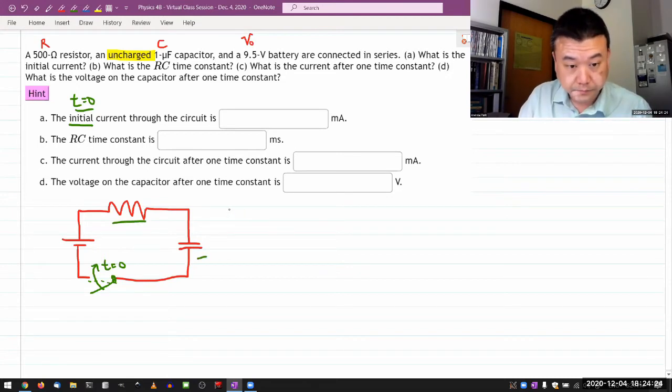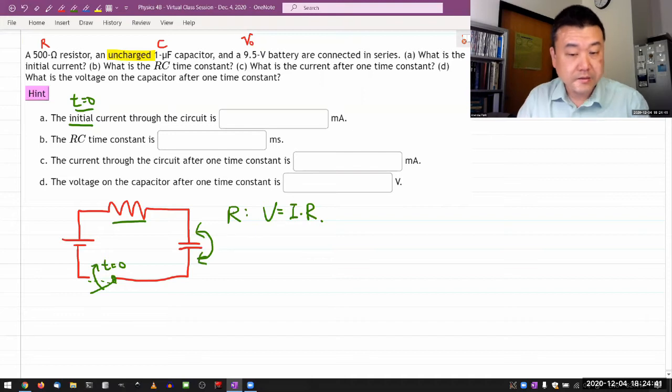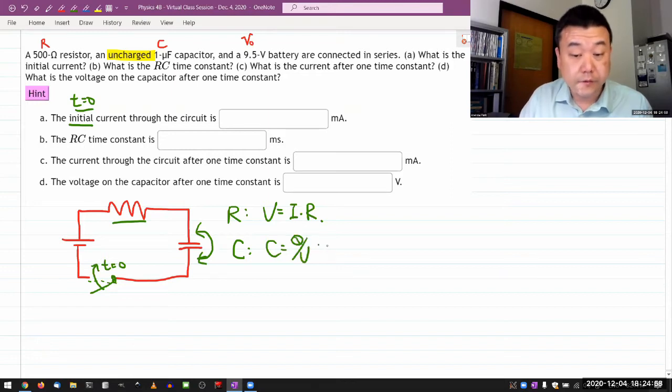So for register, the expression for voltage across the register is current times resistance. Simple enough, that's Ohm's law. For capacitor, the voltage across the capacitance is given by the definition of capacitance. The definition of capacitance says capacitance is Q over V. So if you're solving for V, you get voltage across a capacitor is amount of charge stored divided by C.